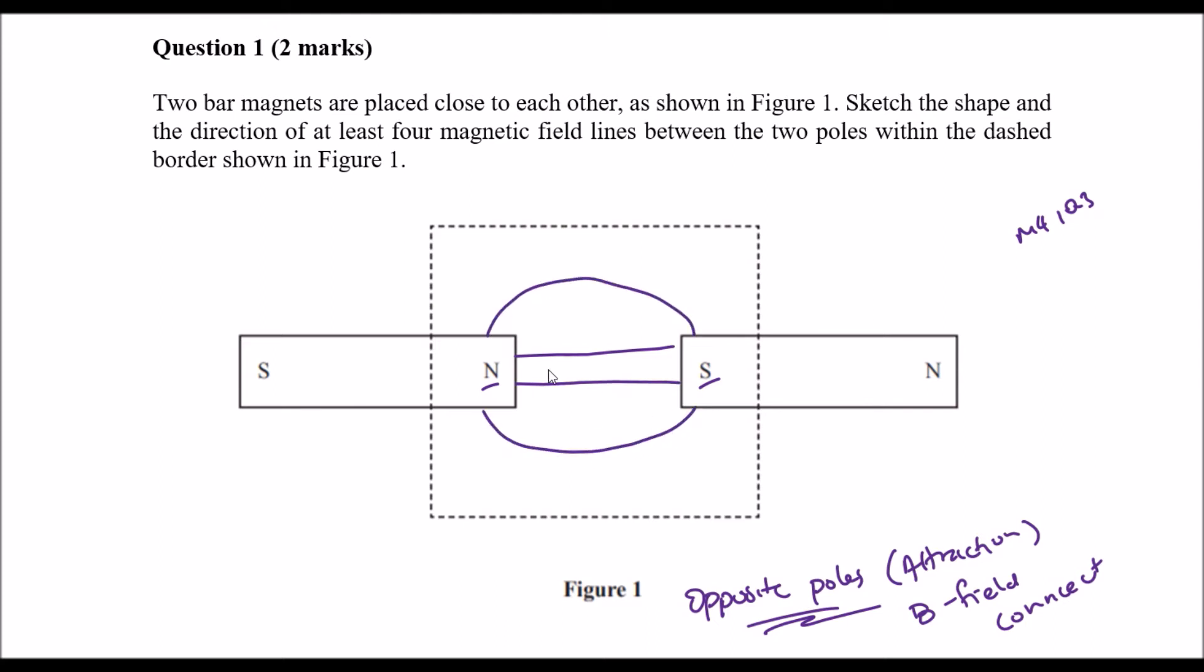We also know the further away we are from the poles, the lines tend to be more sparsely dense away from each other, so that kind of represents why these lines are diverging away and then kind of loop back in.